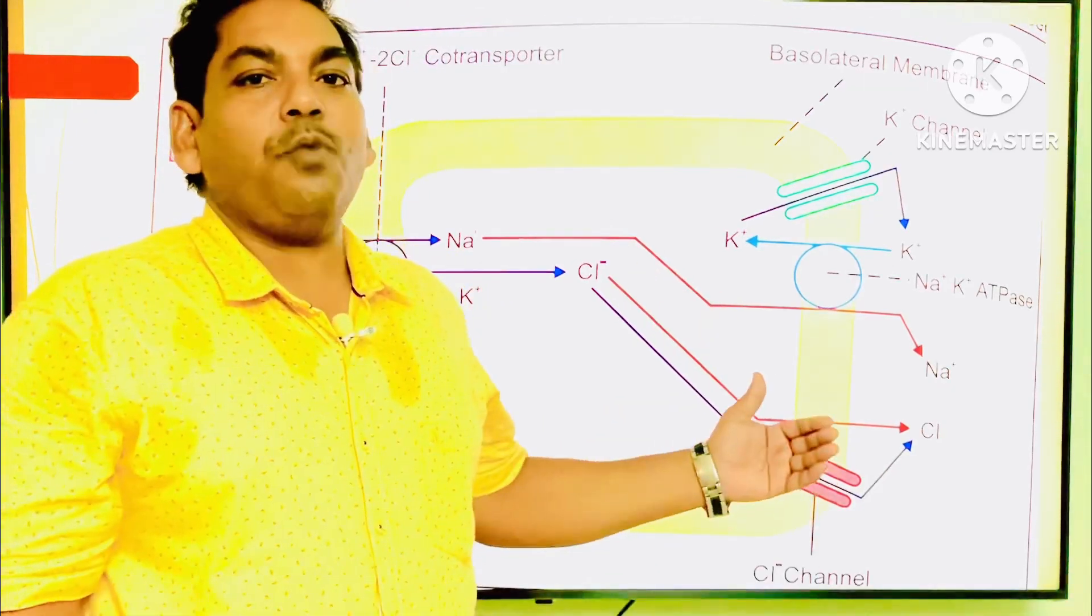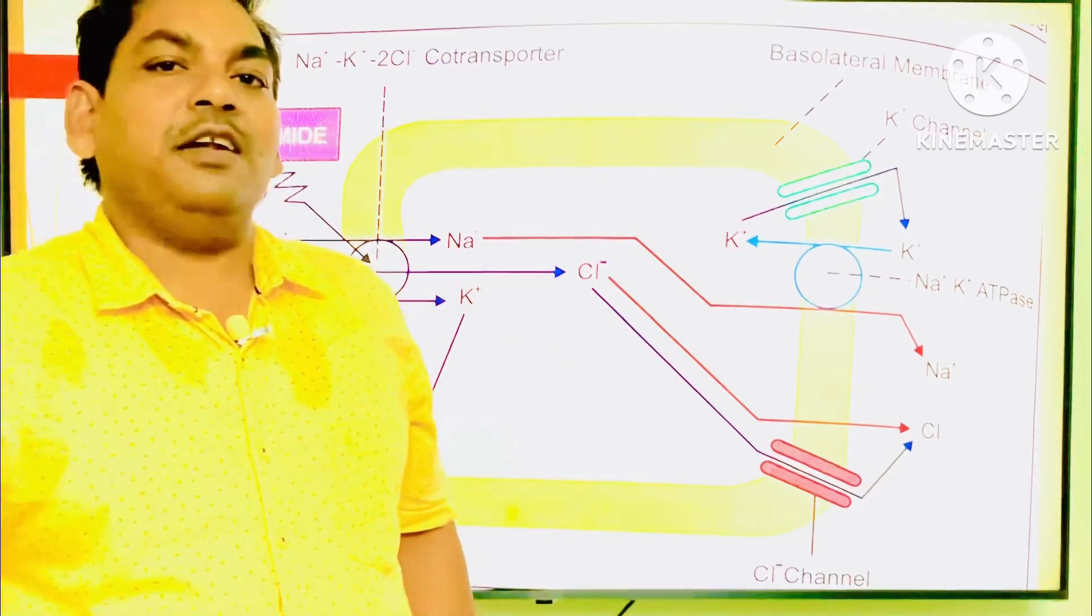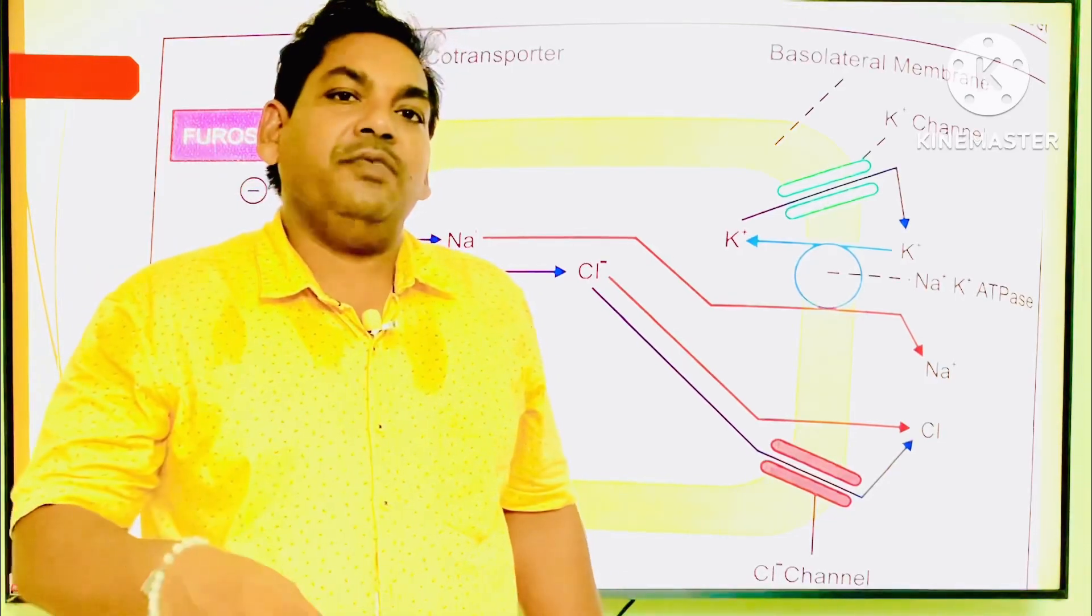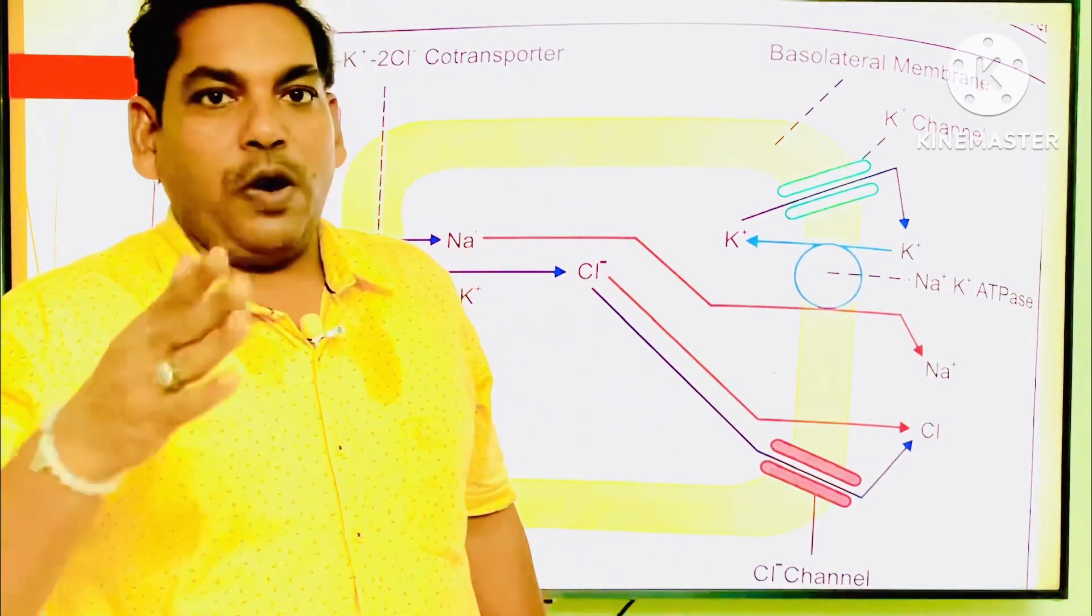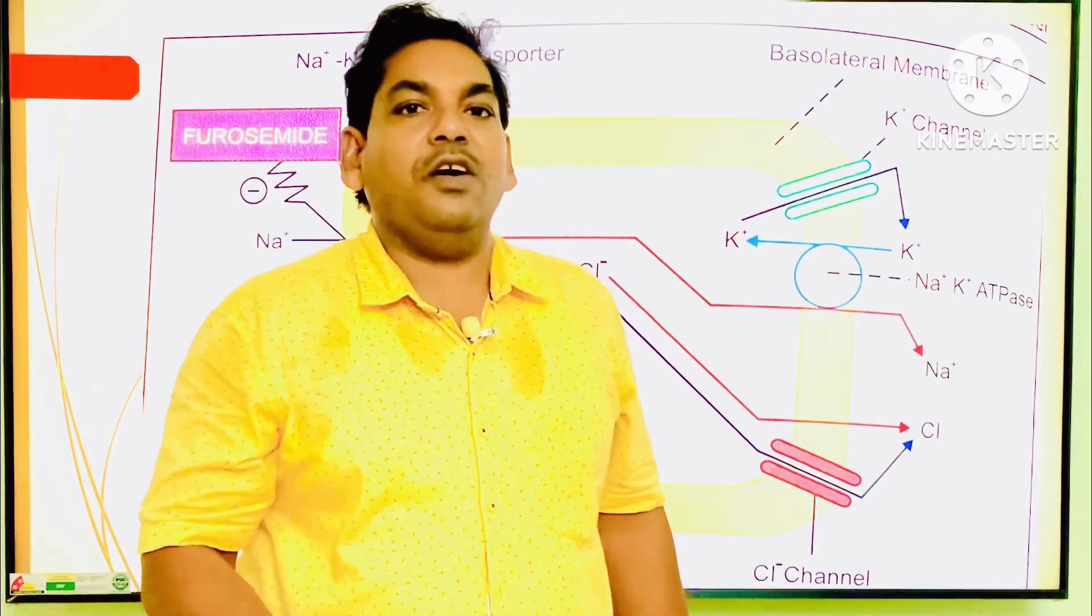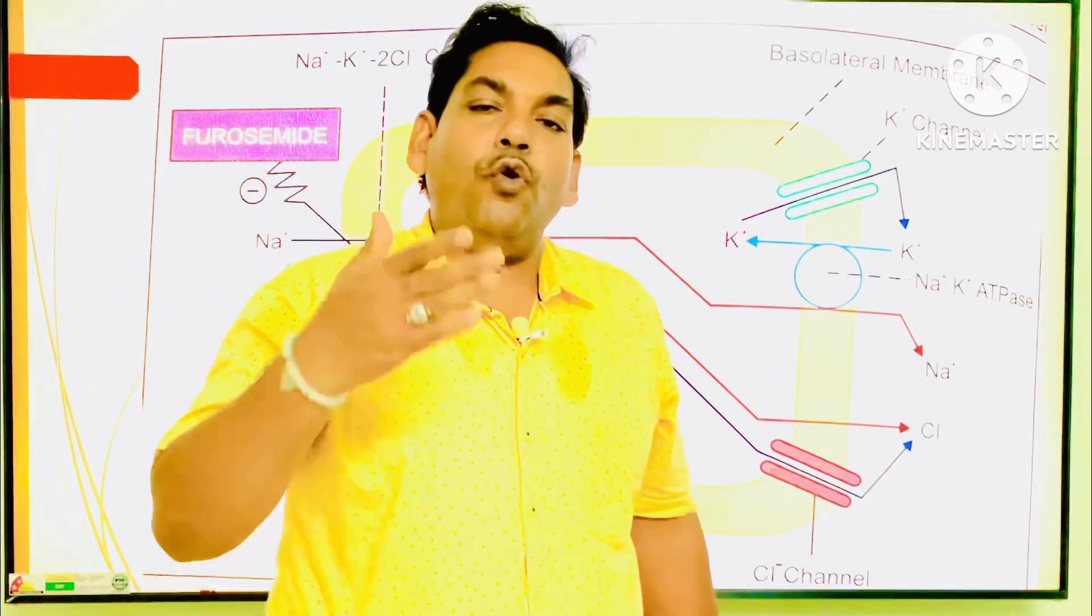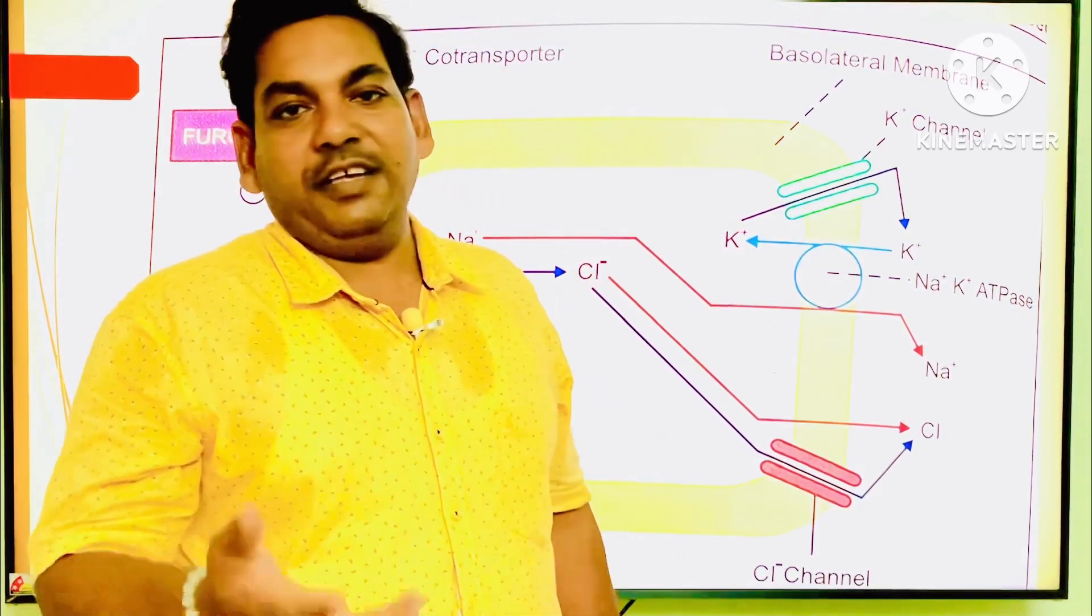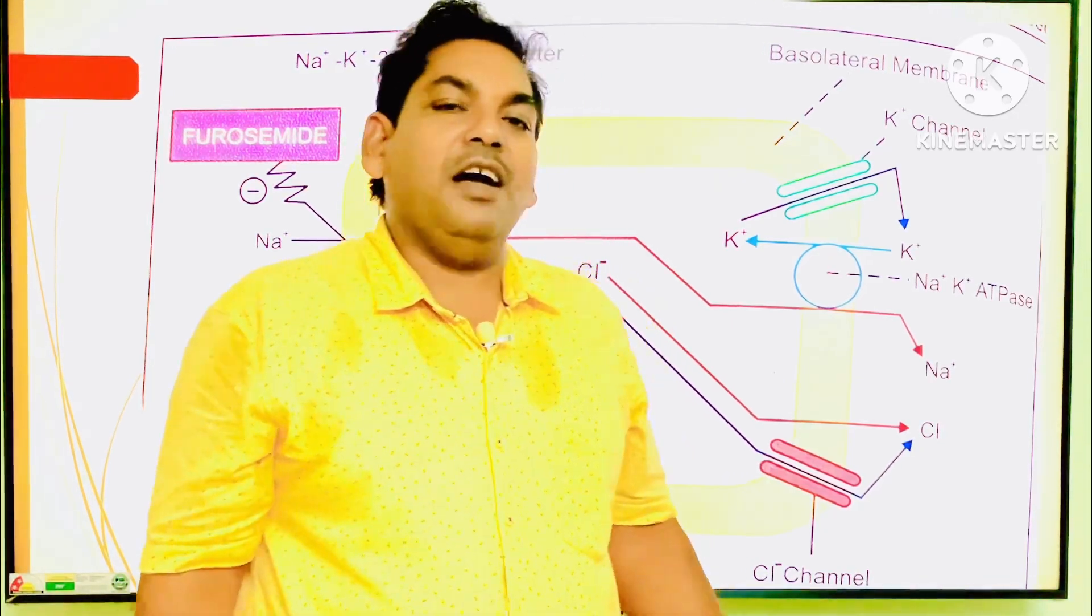At that time, excess water is processed in the lumen by osmosis, ultimately increasing the volume of urine that escapes from the body. Normal urination is 1.5 to 2 liters in 24 hours, but a patient taking furosemide, a loop diuretic, can eliminate 4 to 5 liters in 24 hours. This ultimately reduces the preload or excess water and salt accumulation in the body.